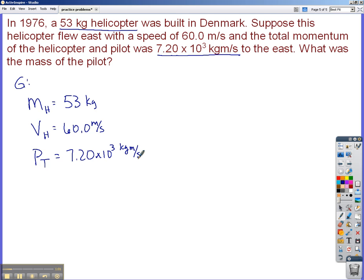So what we want to do here is we know the total momentum and we know the velocity. And obviously if the helicopter is going 60 meters per second, so is the pilot. So this is actually both velocities. And we know the mass of the helicopter. So if we know the mass of the helicopter and the velocity of the helicopter, we can figure out how much of this total momentum was due to the helicopter. So let's do that first.